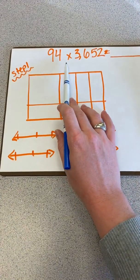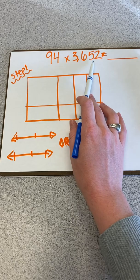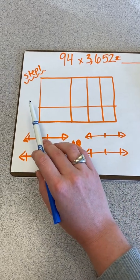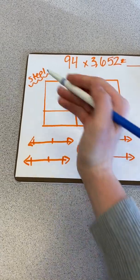Find the product of 94 times 3,652 using an area model, which is our step one and our foundation of multiplying.